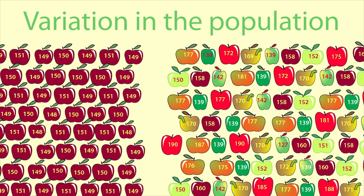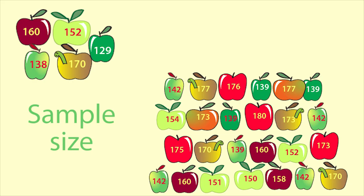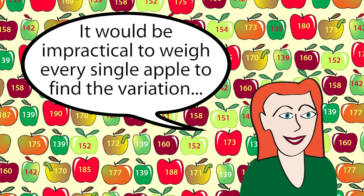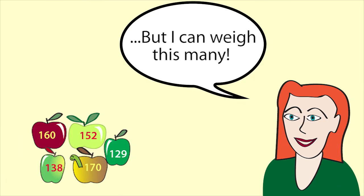Two things will affect the width of any confidence interval: variation in the population and sample size. We don't know the variation in the population, but the variation in the sample will be an indicator of the variation in the population.